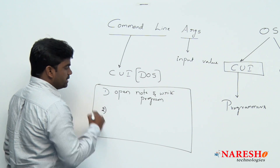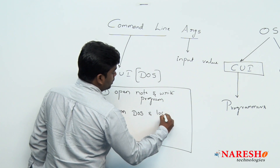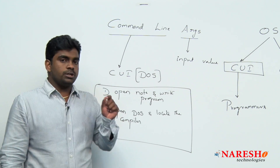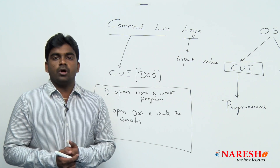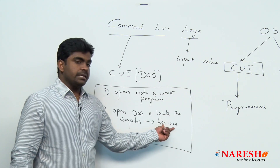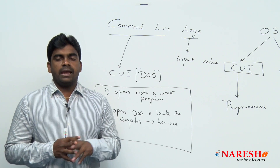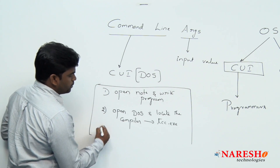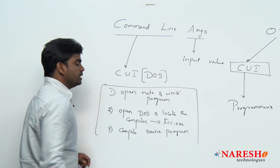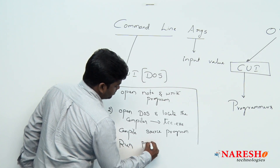After saving with a .c extension, the second step is we need to open DOS — open command prompt — and locate the compiler. The compiler is a program; it is a .exe file on Windows operating system. For example, Turbo C compiler: tcc.exe. With the help of the compiler, you have to compile the application. If your program name is program.c, we compile it and it generates program.exe. Then we can run that application. This is the process.